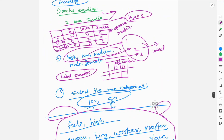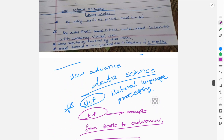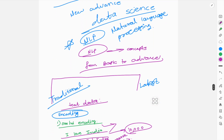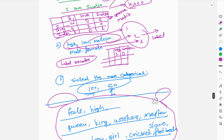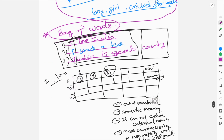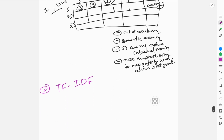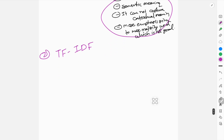In this lecture we have seen how basic NLP works and how words are converted into numerical representations using encoding and embedding methods. We have seen various methods such as one-hot encoder, label encoder, dummy encoder, and simple examples for bag of words, along with their drawbacks. In the next series we are going to move towards TF-IDF.